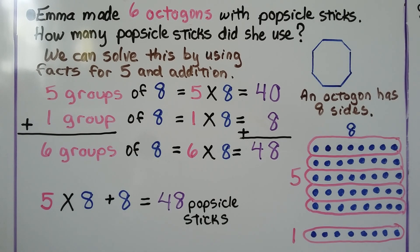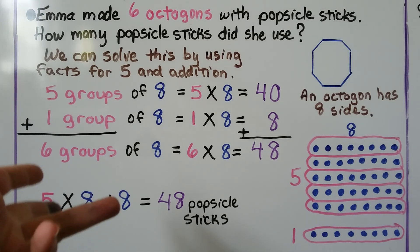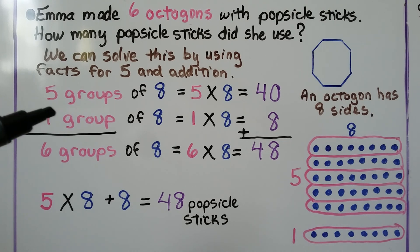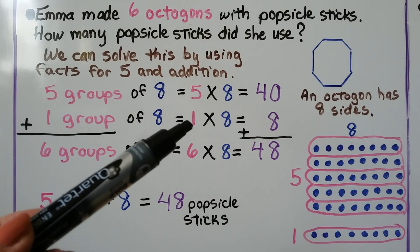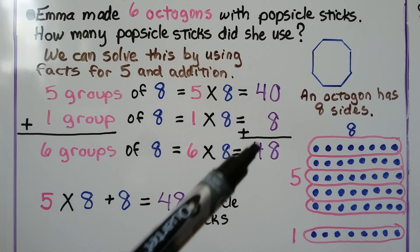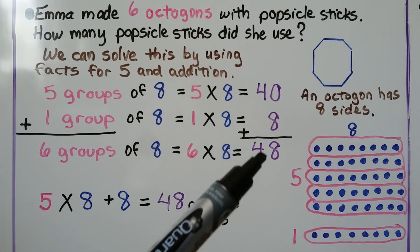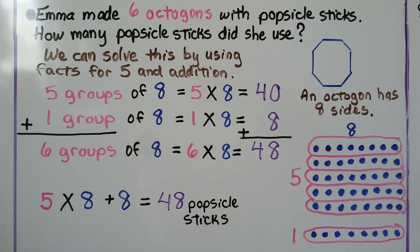We can skip count: 5, 10, 15, 20, 25, 30, 35, 40. Now we just add one more group of 8. That would be like 1 times 8, which is 8. We have 40 plus 8, which is 48. So 6 groups of 8 is equal to 6 times 8, which is equal to 48.